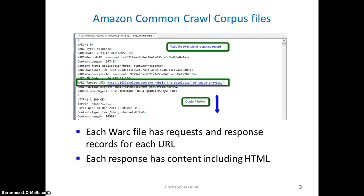My project reads webpages from the Amazon Common Crawl corpus. This is located on the Amazon S3 storage service. These are compressed work files. I will read these work files into Google Cloud Bigtable and then access them.